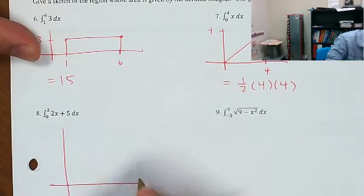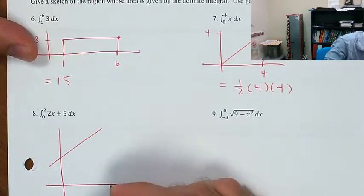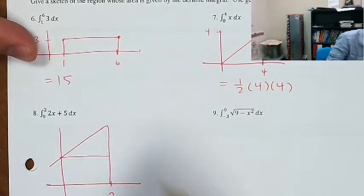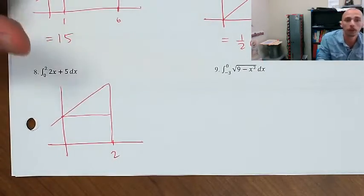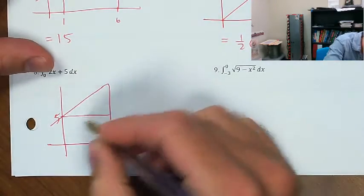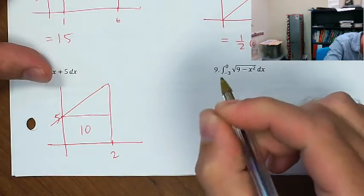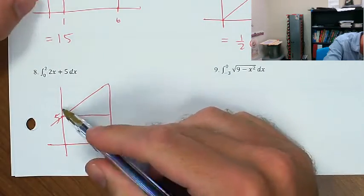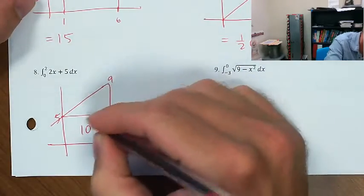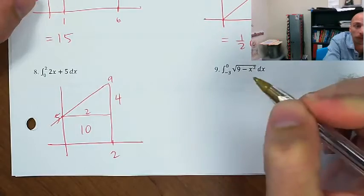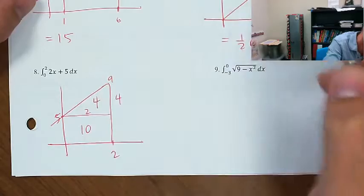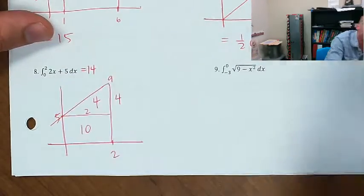2x + 5: that's going to be a trapezoid. I'm going to split this up into a triangle and a rectangle. At x = 0, the value is 5, giving a rectangle area of 10. At x = 2 this will be 9, so the triangle has width 2 and height 4 — area is one-half times 2 times 4, which is 4. So this integral equals 14.